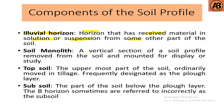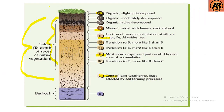A soil monolith is a vertical section of a soil profile removed from the soil and mounted for display or study. Topsoil is the uppermost part of the soil, ordinarily moved in tillage and frequently designated as the plow layer — that means the upper portion of the soil profile, which is the O and A horizons, is known as topsoil.